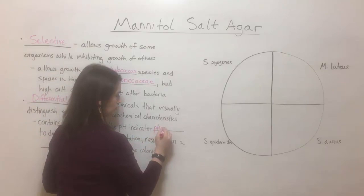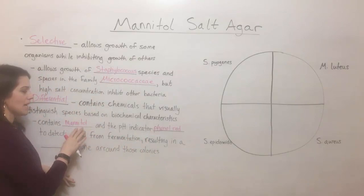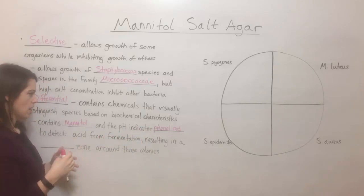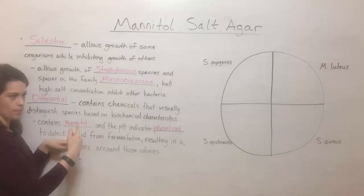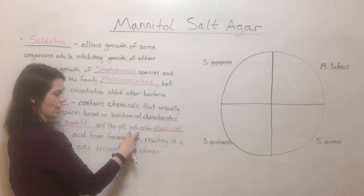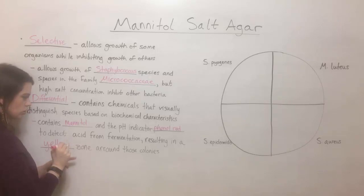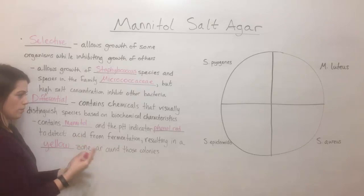Phenol red is what gives mannitol salt agar its characteristic bright pink color. Because the agar has mannitol and the pH indicator phenol red, the pH indicator will change color when it detects acid. When acid is produced by bacteria that can ferment the mannitol — remember, mannitol is a carbohydrate — if the bacteria can ferment it, it results in an acid byproduct. That acid drops the pH, which changes the color of the pH indicator, creating a yellow zone around the colonies of bacterial species that can ferment the mannitol.